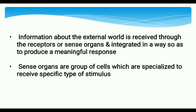External world information is received by sense organs. Sense organs are present at the receptors and they are perceiving stimuli. They are integrated and we have a meaningful response produced. Sense organs are a group of cells which are specialized to receive a specific type of stimulus. The eye, for example, gives you sight — one specific type of stimuli responded to by the sense organ.